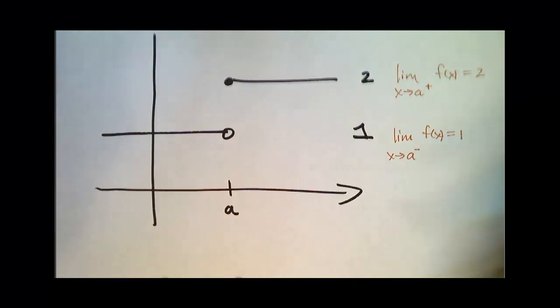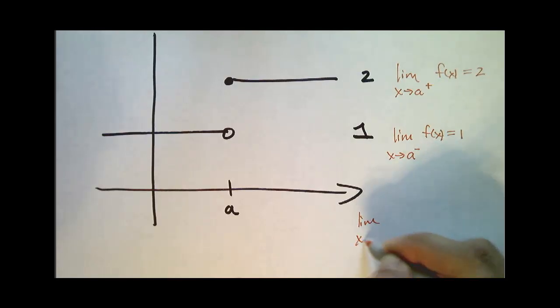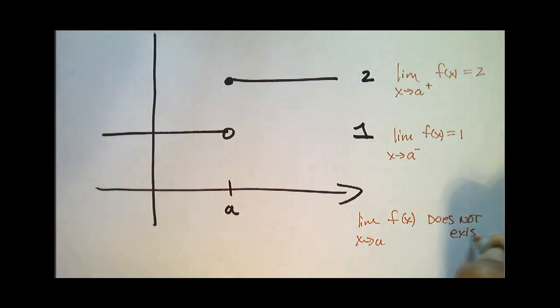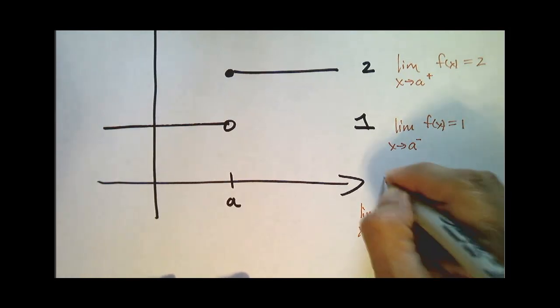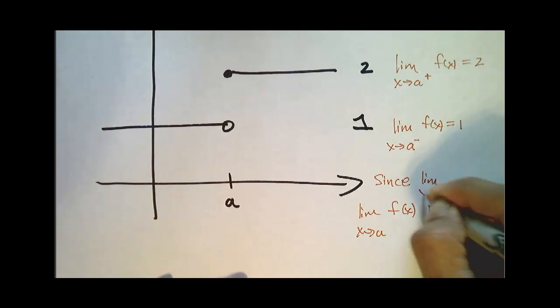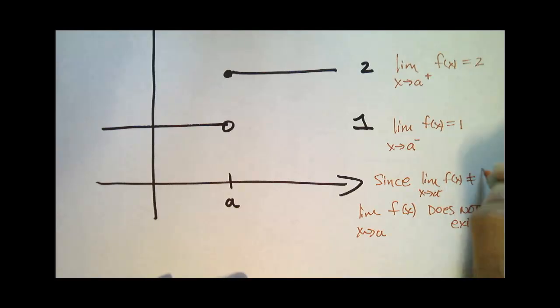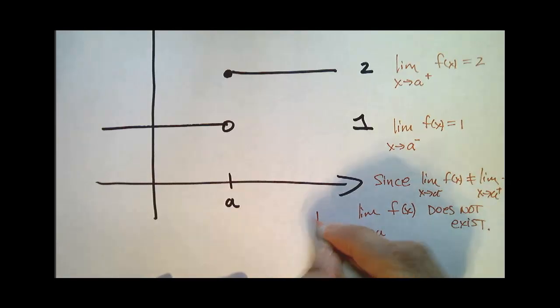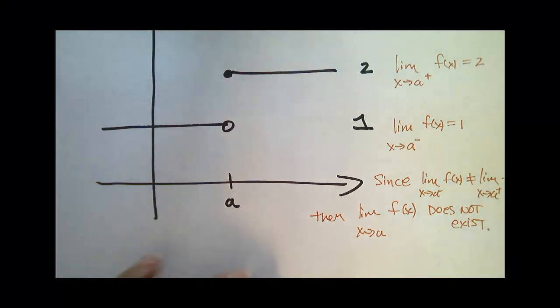Since these are not equal, then the limit as x approaches a of f of x does not exist. And you know, if you were to write this up as a solution, you would say since the limit as x approaches a from the left of f of x does not equal the limit as x approaches a from the right of f of x, then this limit does not exist. So if it doesn't have the same left and right-handed limits, we say it doesn't exist.